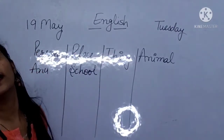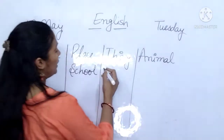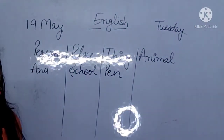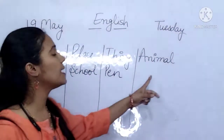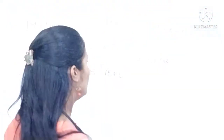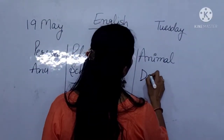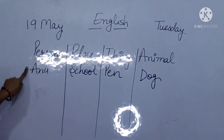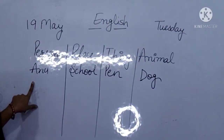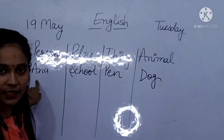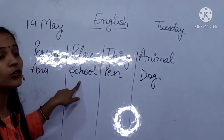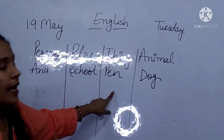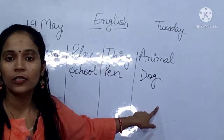Now thing. Pen — pen bhi ek thing hai. So we are writing pen. Now next is any animal name, like dog. So here we have: person name — Anu, place — school, thing — pen, and animal — dog.